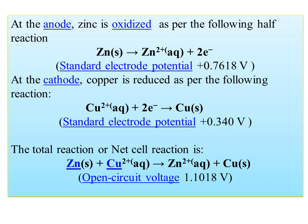The standard electrode potential for zinc is 0.7618 volts. Cu²⁺ ions in aqueous form accept two electrons and are converted into copper solid. The standard electrode potential for copper is 0.340 volts. The overall reaction is Zn + Cu²⁺ → Zn²⁺ + Cu, giving a total cell voltage of 1.1018 volts. The open circuit voltage is 1.1018 volts.